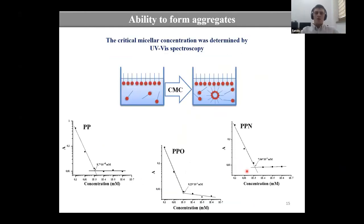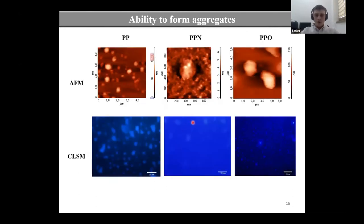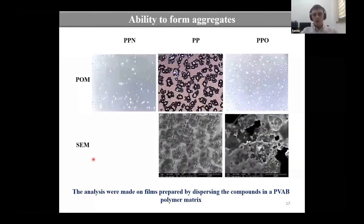We also determined the critical micellar concentration using UV-Vis spectroscopy, and this concentration is around 0.7 to 0.9 micromolar. The spherical shape of the aggregates was confirmed using techniques such as atomic force microscopy and confocal microscopy. We also used polarized optical microscopy and scanning electron microscopy to observe these aggregates, but these two techniques were done on compounds dispersed in a polymer matrix.